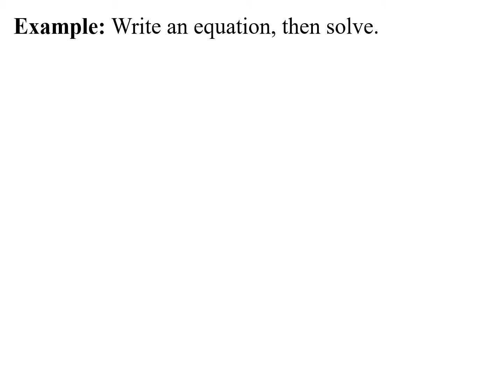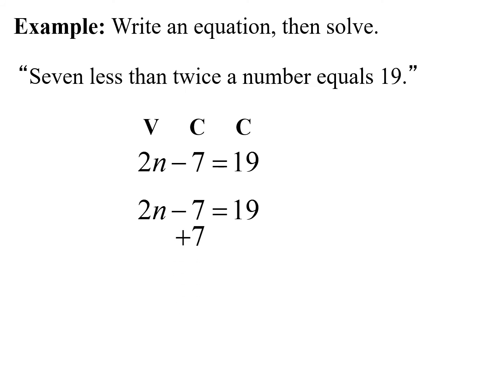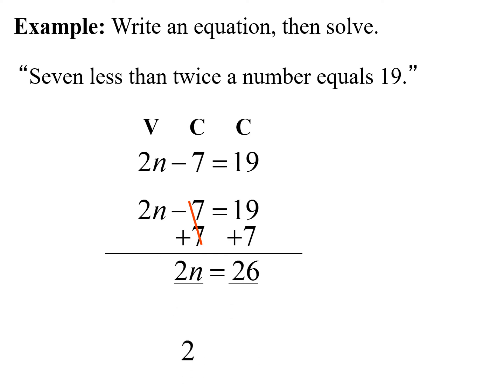For this example, we want to write the equation and then solve. The statement is: '7 less than twice a number equals 19.' '7 less than' means subtraction, so we take twice a number and subtract 7: 2n minus 7 equals 19. The variable term is 2n, negative 7 and 19 are constants. Add 7 to both sides to get 2n equals 26, then divide by 2, giving n is equal to 13.